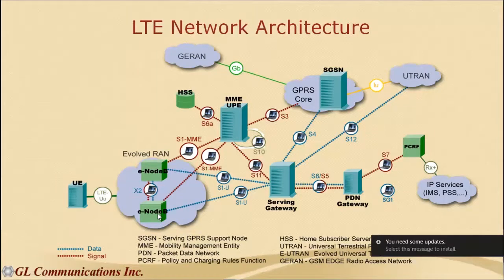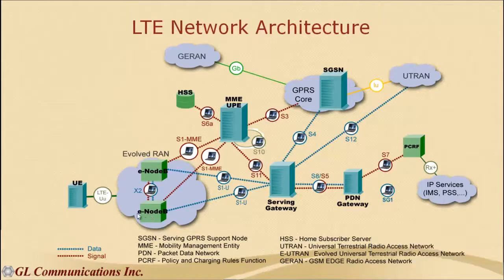E-NodeB handles radio resource management functionalities like setting up bearers, maintenance and releasing of radio bearers. It does admission control — either allows or denies the radio bearer setup request. It routes packets from UE towards the serving gateway. It does packet compression to effectively use radio resources and also performs ciphering of user plane traffic. It enforces rate control of established radio bearers based on the bitrate negotiated during setup.